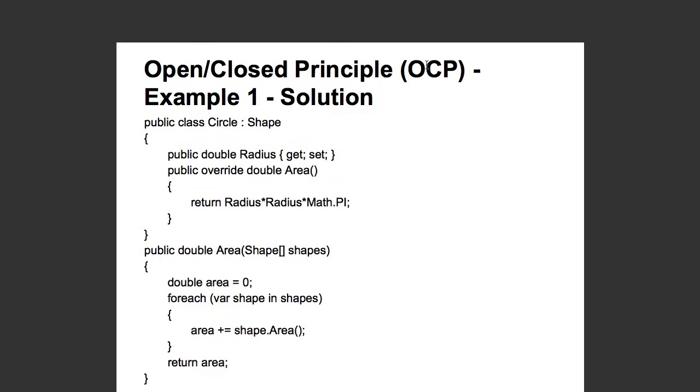But, we are open for extension because whenever you would want to create a new shape, all that you need to do is to create the shape and define the area method inside it. So, we are open for extension, open for new shapes, but closed for modification. We don't really need to change the area method.